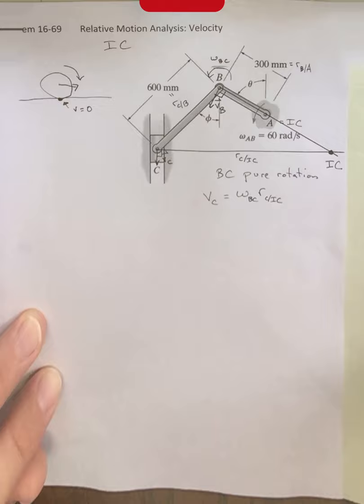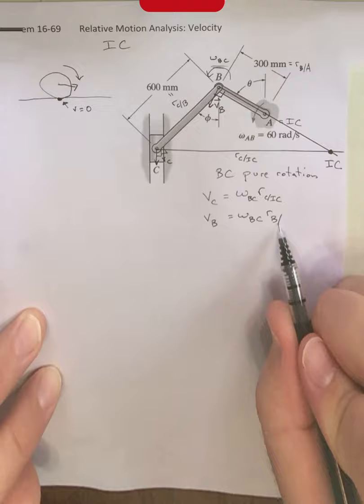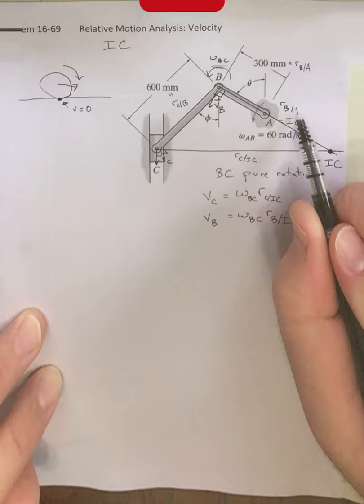Similarly, point B is also undergoing a pure rotation about that point. In other words, VB is equal to omega BC multiplied by this distance between B and our instantaneous center. R, B, IC. This entire distance here is R, B, IC.